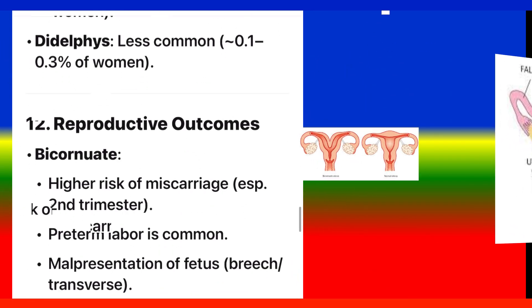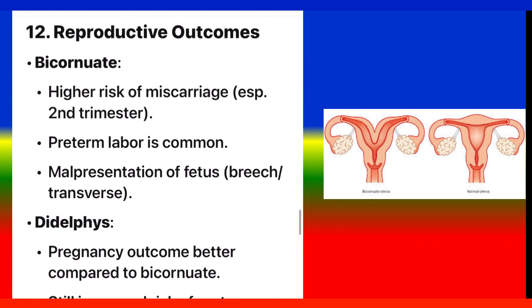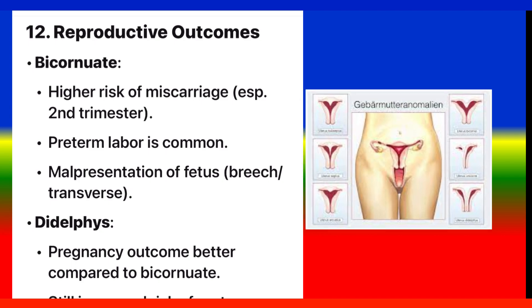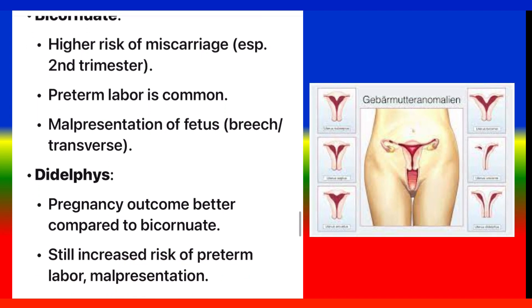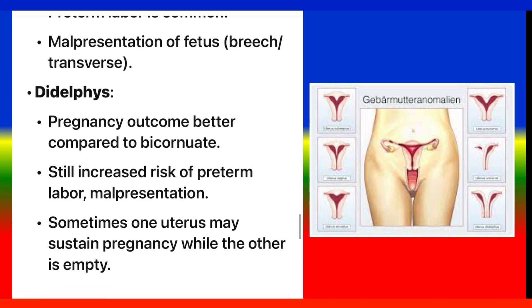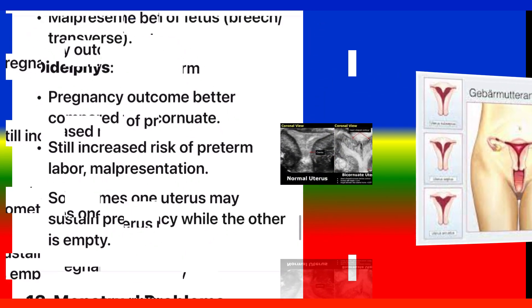Point 12: Reproductive outcomes. Bicornuate: higher risk of miscarriage especially in the second trimester, preterm labor is common, and malpresentation of fetus — breech or transverse. Didelphys: pregnancy outcome is better compared to bicornuate, though there is still increased risk of preterm labor and malpresentation. Sometimes one uterus may sustain a pregnancy while the other is empty.